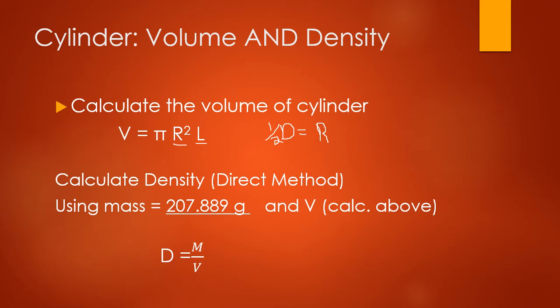We're also going to calculate the density of this cylinder, but we won't do that until page 17. Before getting into density, let's look at the questions. One question asks you to calculate the volume, which we just described. The next asks for the volume in milliliters, and another asks for the volume in meters cubed. A helpful conversion: one centimeter cubed equals one milliliter. For going from centimeters cubed to meters cubed, look up your metric-to-metric conversion and make sure to cube it when you use it.